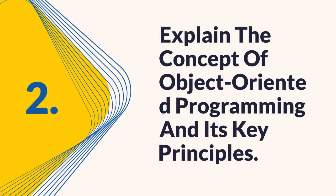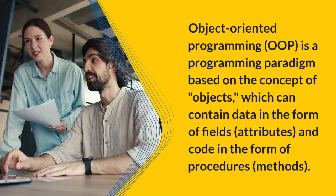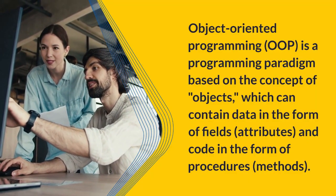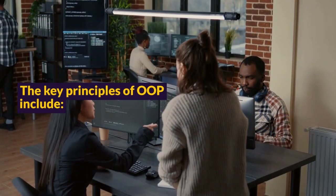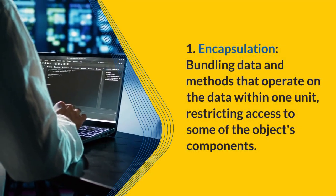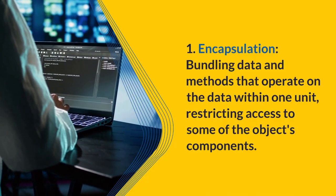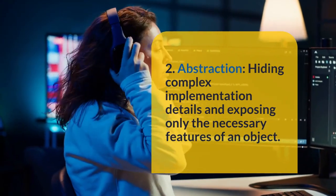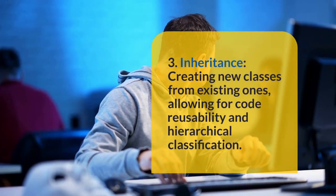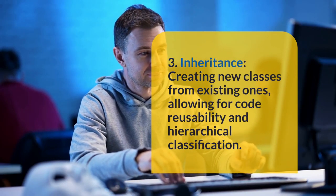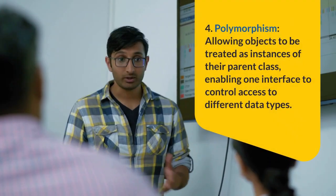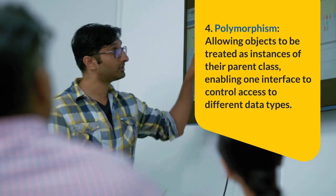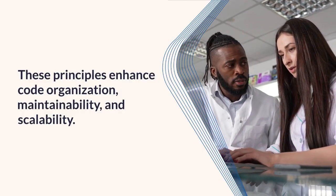Question 2: Explain the concept of object-oriented programming and its key principles. Object-oriented programming (OOP) is a programming paradigm based on the concept of objects, which can contain data in the form of fields and attributes, and code in the form of methods. The key principles include: 1) encapsulation — bundling data and methods within one unit, restricting access to some components; 2) abstraction — hiding complex implementation details; 3) inheritance — creating new classes from existing ones for code reusability; and 4) polymorphism — allowing objects to be treated as instances of their parent class. These principles enhance code organization, maintainability, and scalability.